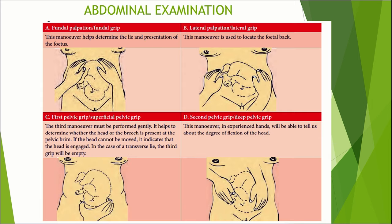Next we move on to abdominal examination. There are four types of grips. The first is fundal palpation or fundal grip — this maneuver helps to determine the lie and presentation of the fetus. The second is lateral palpation or lateral grip, used to locate the fetal back. The third is the pelvic grip or first pelvic grip (superficial pelvic grip) — it helps determine whether the head or breech is present at the pelvic brim; if the head cannot be moved, it indicates the head is engaged; in case of transverse lie, this grip will be empty. The fourth maneuver is the second pelvic grip or deep pelvic grip, done only by experienced hands, telling us about the degree of flexion of the head. These four grips help identify fetal lie, presentation, and whether the head is engaged.